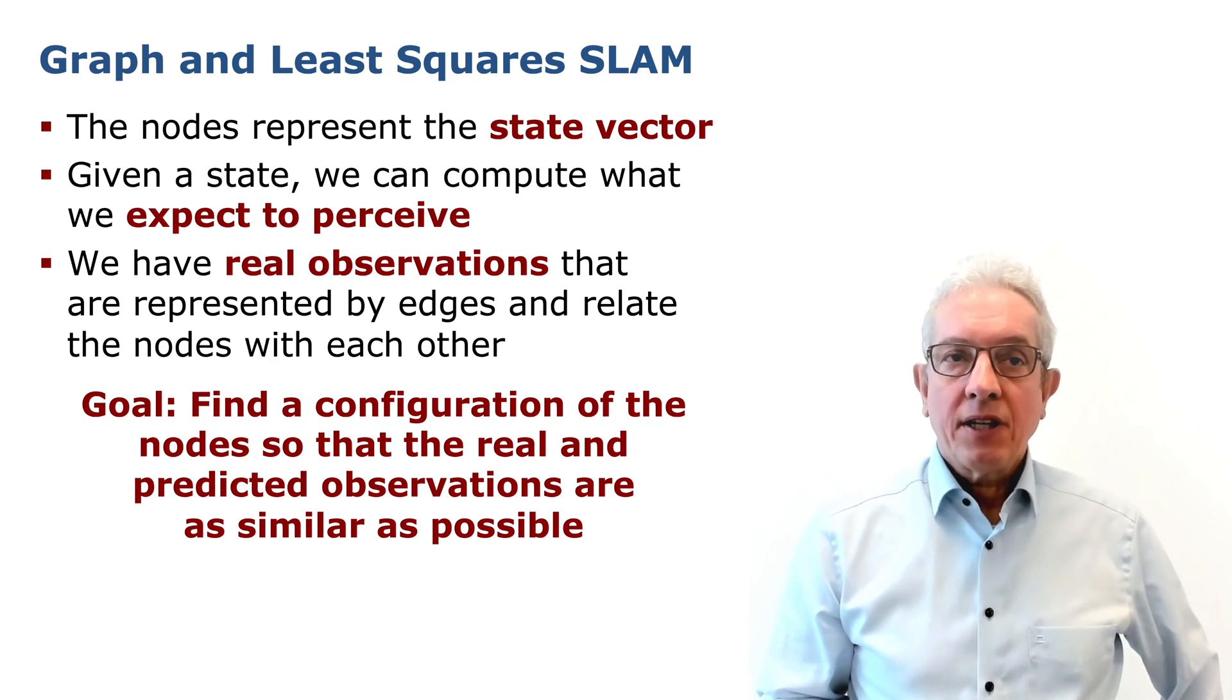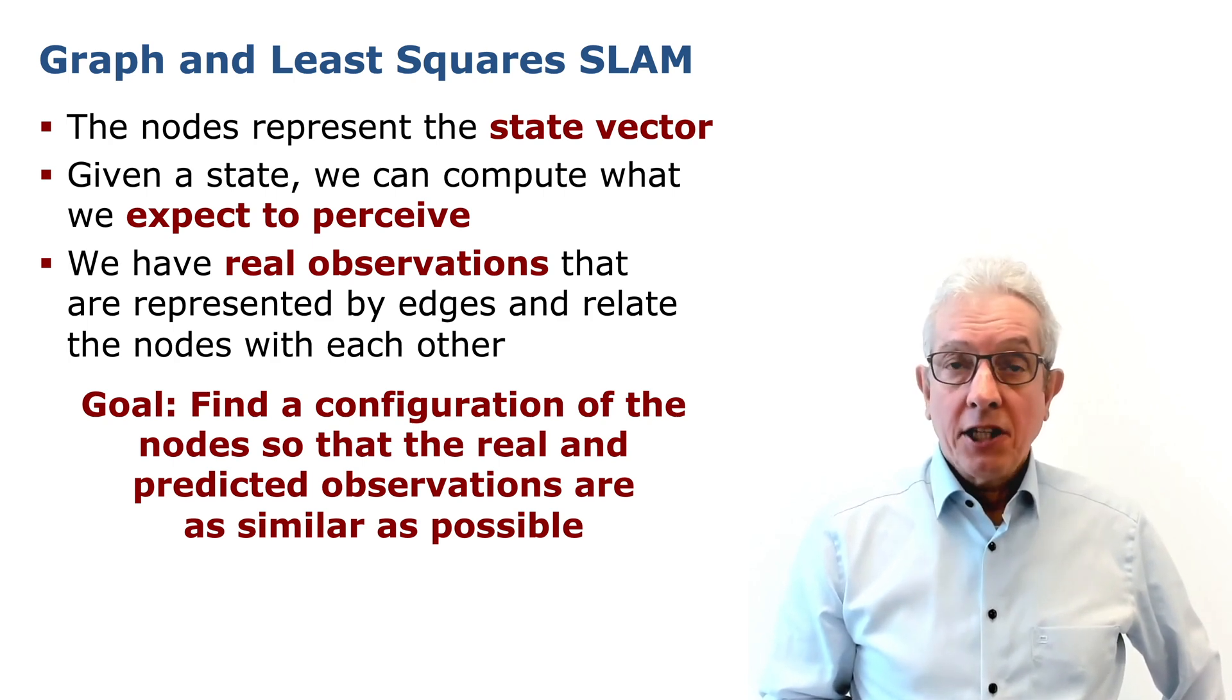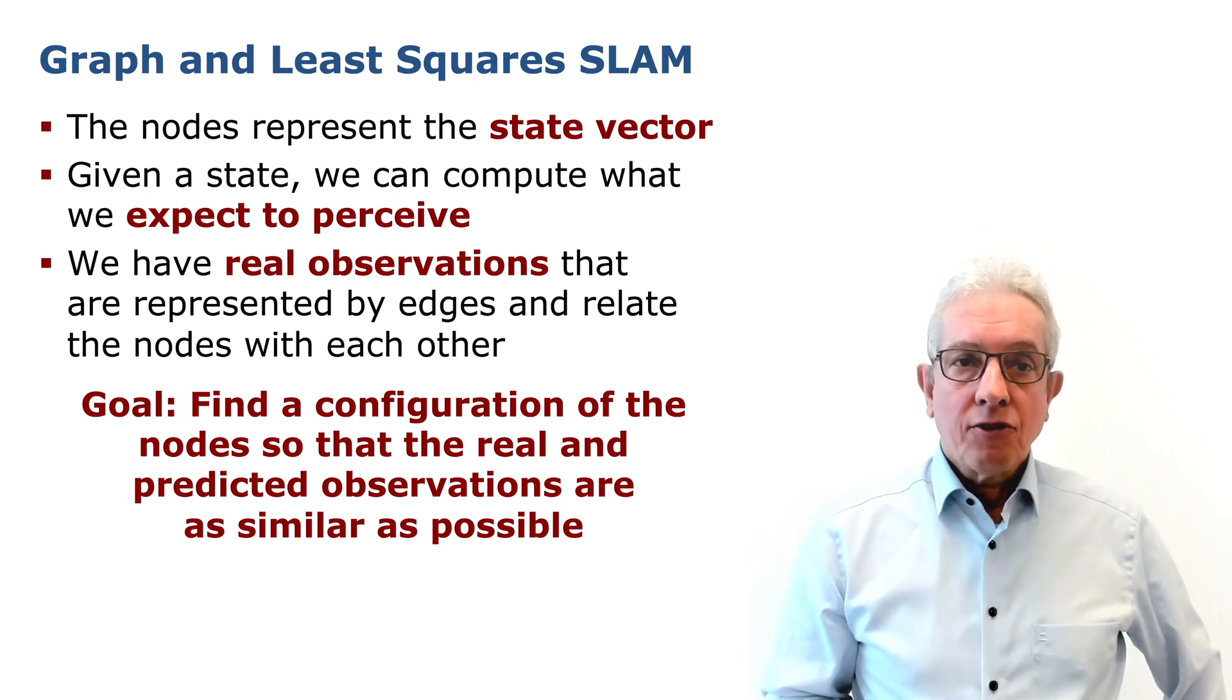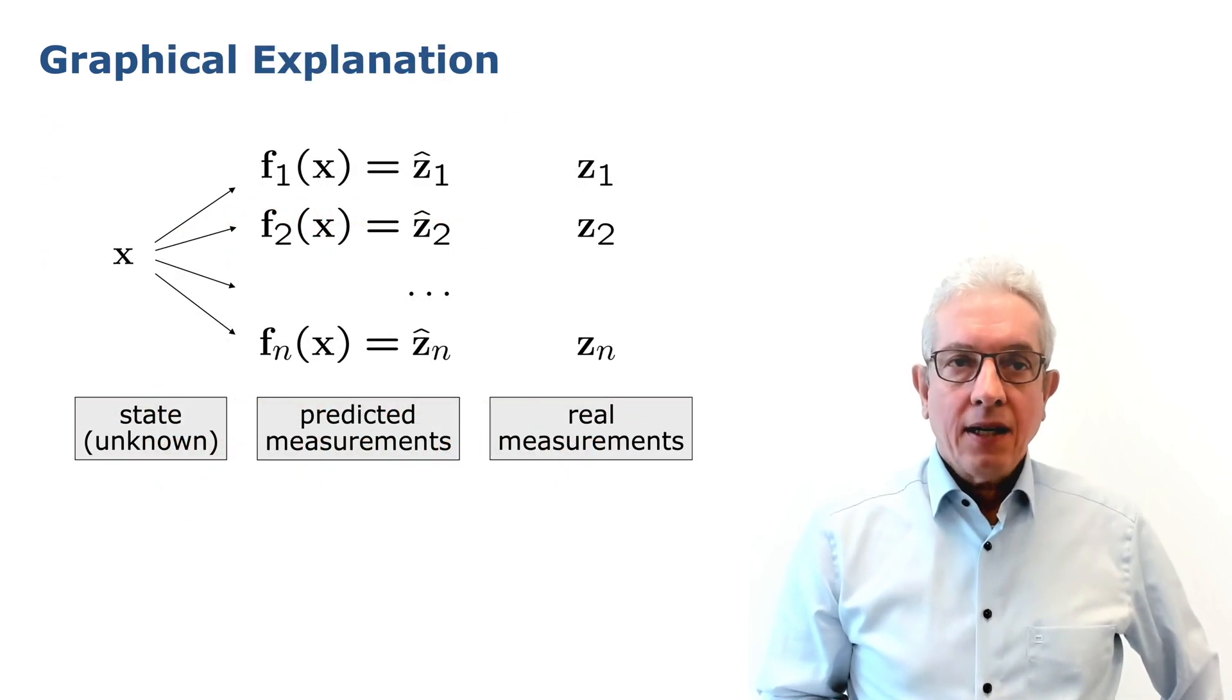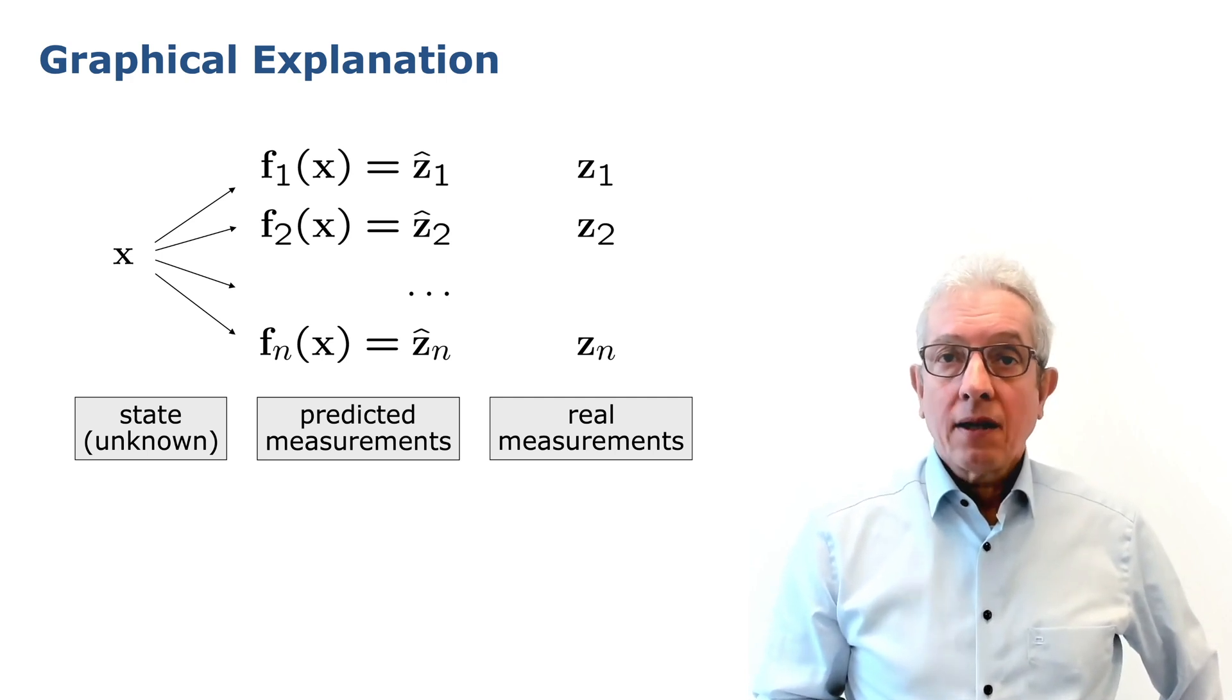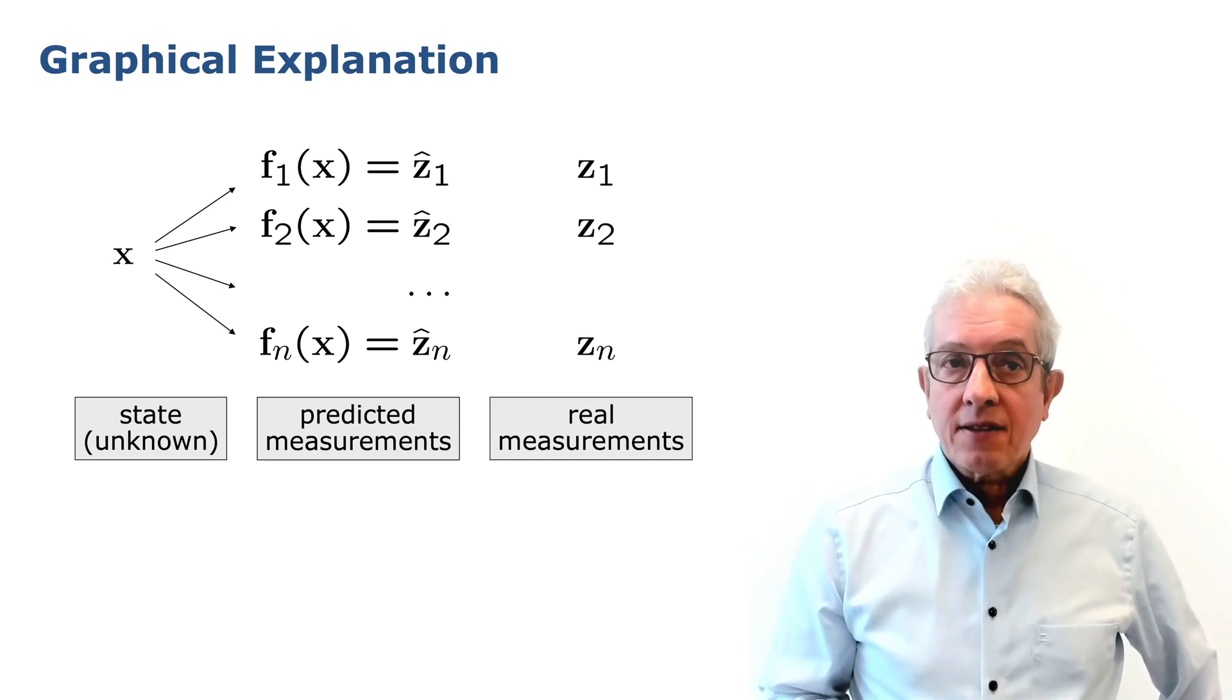On the other hand, we have real observations that are represented by the edges and relate the nodes with each other. The goal now is to find the node configuration that minimizes the error between the predicted and the real observations. So basically what we are doing is we are taking the state consisting of all the nodes and calculate the predicted measurements for every measurement that we have. And then we compare every predicted measurement with the real measurement.